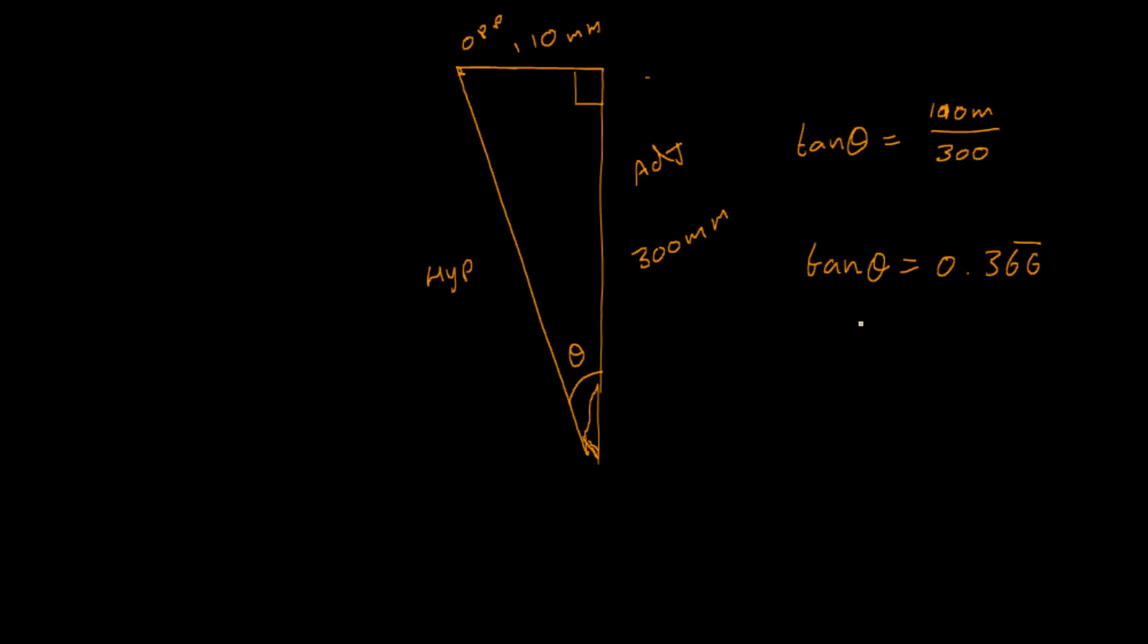To get the angle theta, we have theta equals tan to the negative 1, 0.366 recurring. So, we just type that into the calculator, which is normally the shift tan button will get you to tan to negative 1. And you just type in your answer and we get theta is equal to 20.136 degrees.